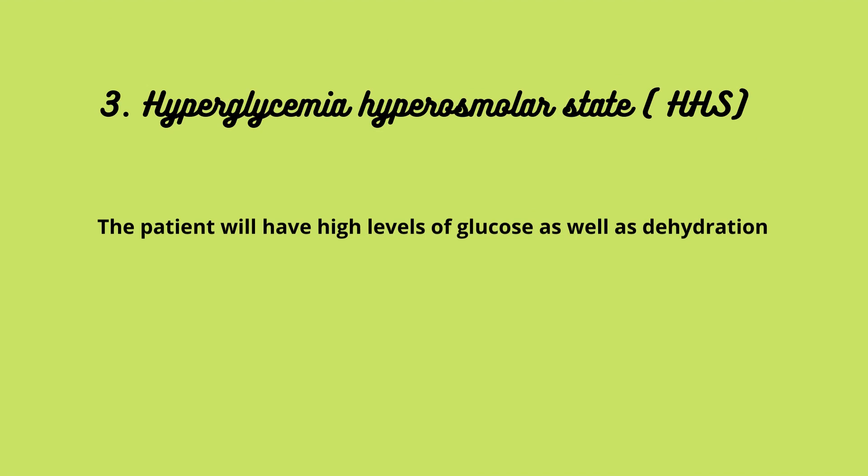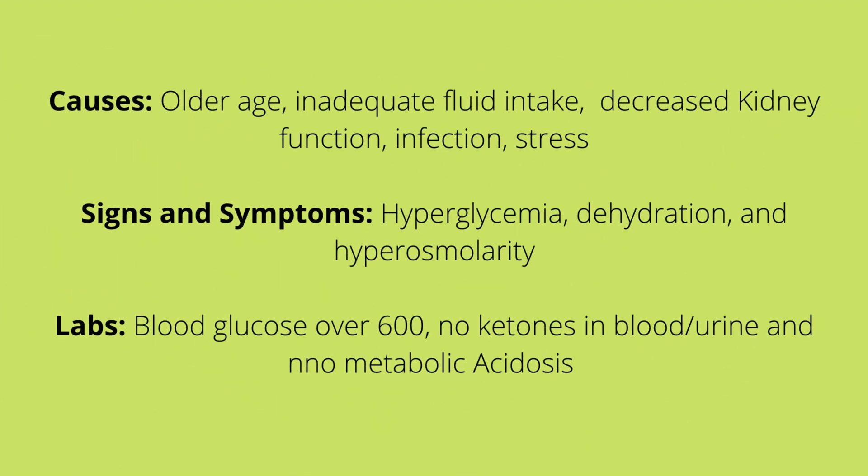Treatment for DKA: identify and treat the underlying cause of the complication, administer fluids and insulin, and check blood glucose levels hourly. HHS — hyperglycemic hyperosmolar state — is when the patient has high levels of glucose as well as severe dehydration. It has a gradual onset and is most common with type 2 diabetes.